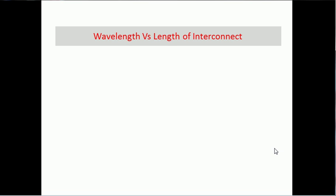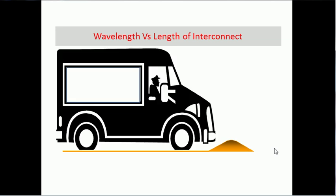Suppose you are on a road with a speed breaker and suppose you are driving a big car or a big bus. The kind of interaction, the kind of experience when you interact with that speed breaker will be of one kind. And if I consider the same road with the same speed breaker and now if I consider a toy car or an ant, the kind of experience which these guys will have will be completely different.